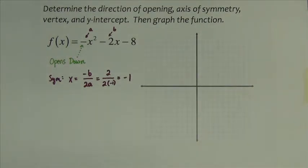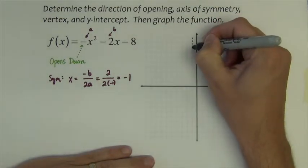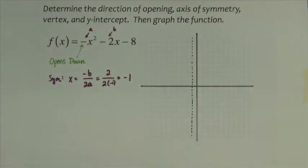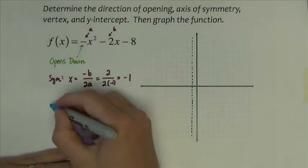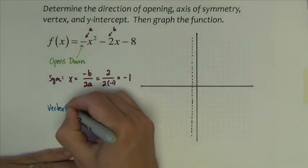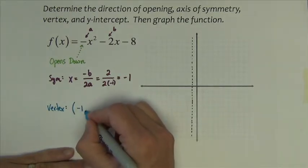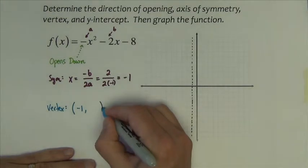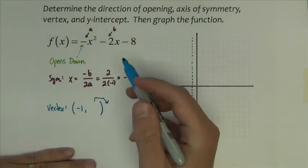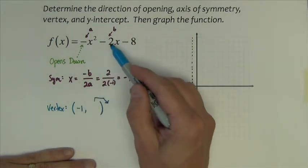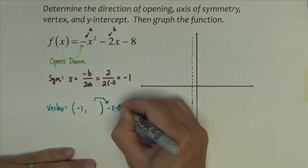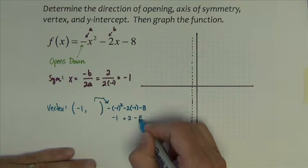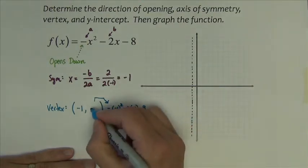You can go ahead and put that axis of symmetry on your graph, but just make it a faint dotted line. Next we're going to find our vertex. The x value of the vertex is the same as the line of symmetry point — they are one and the same. To find the y value of the vertex, we take the x value and substitute it in for x. That works out to negative 1 squared minus 2 times negative 1 minus 8, which is negative 1 plus 2 minus 8, giving us negative 7.